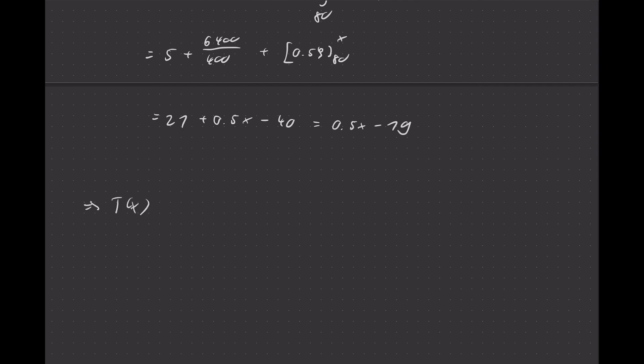That means we have found a formula, a general formula for capital T. It's going to be a piecewise formula: 0 for x between 0 and strictly less than 20; x squared over 400 plus 0.1x minus 3 for values of x between 20 and 80; and finally, 0.5 times x minus 19 for values of x above 80.